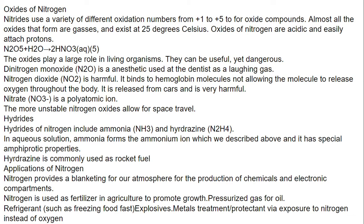Now we come to oxides of nitrogen. Nitrogen uses a variety of different oxidation numbers from plus 1 to plus 5 for oxide compounds. Almost all the oxides that form are gases and exist at 25 degrees Celsius. Oxides of nitrogen are acidic and easily attach protons to form nitric acid. The oxides play a large role in living organisms — they can be useful yet dangerous. Dinitrogen monoxide N2O is an anesthetic, and nitrogen dioxide NO2 is also harmful. It binds with hemoglobin molecules, not allowing them to release oxygen throughout the body, and it is released from cars, causing pollution.